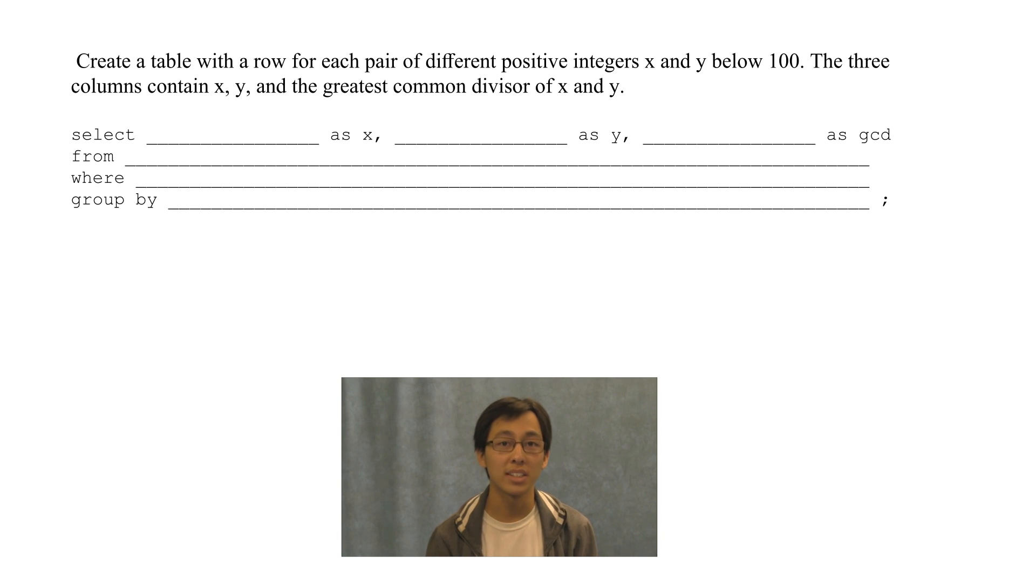Create a table with a row for each pair of positive integers x and y below 100. Three columns contain x, y, and the greatest common divisor of x and y.